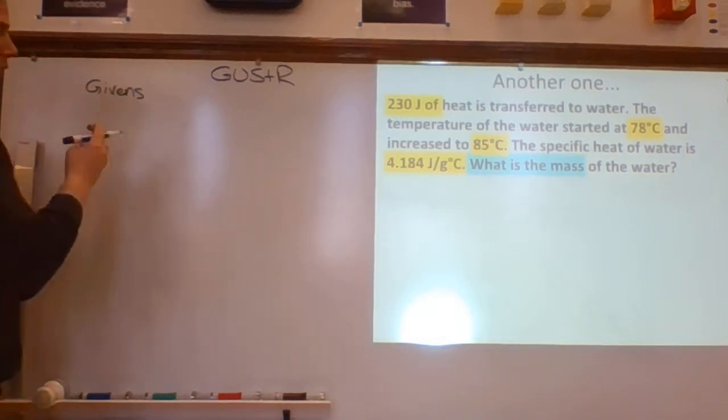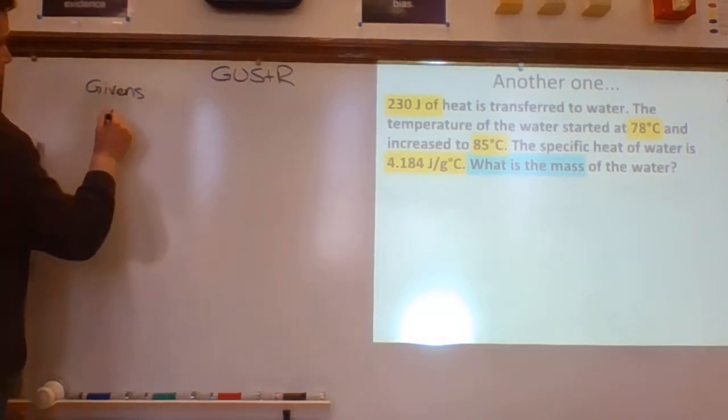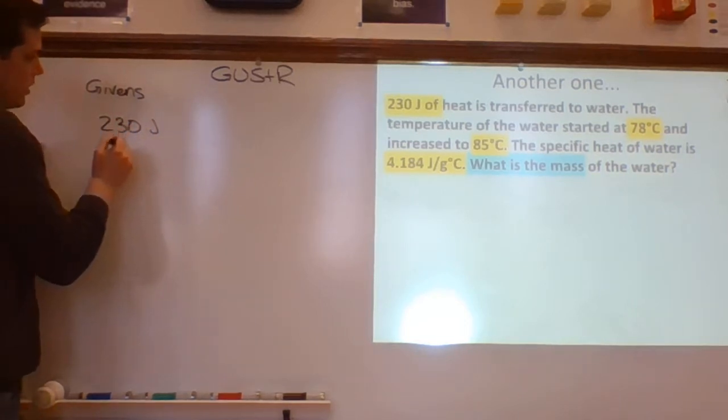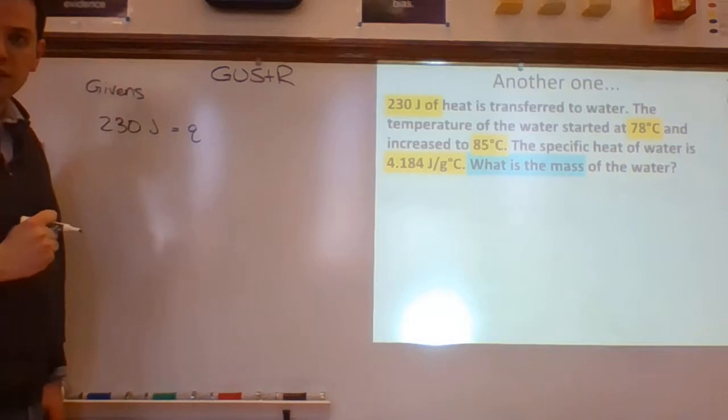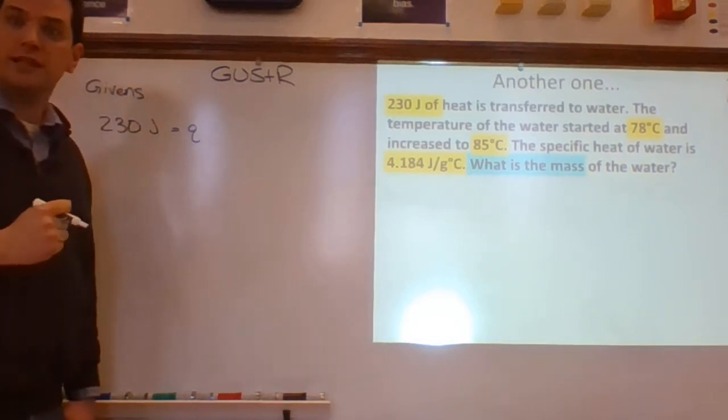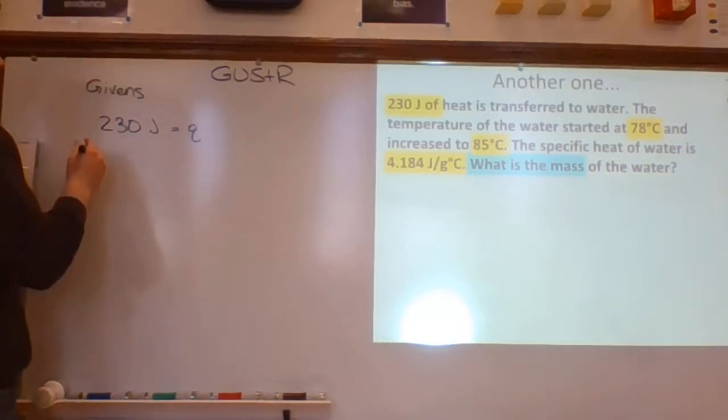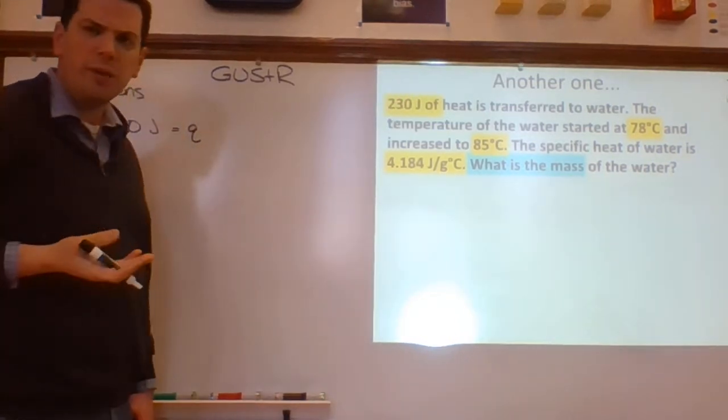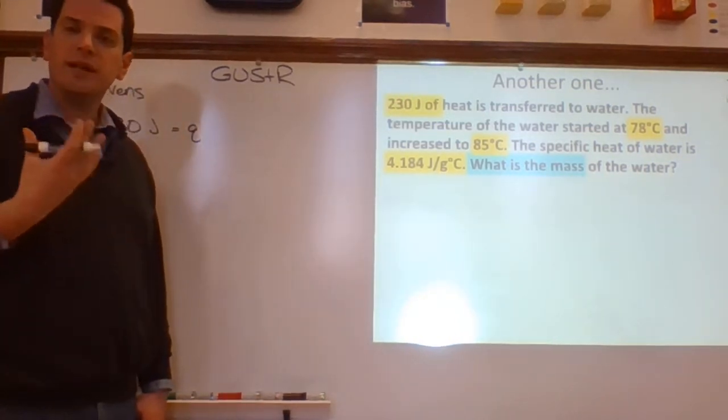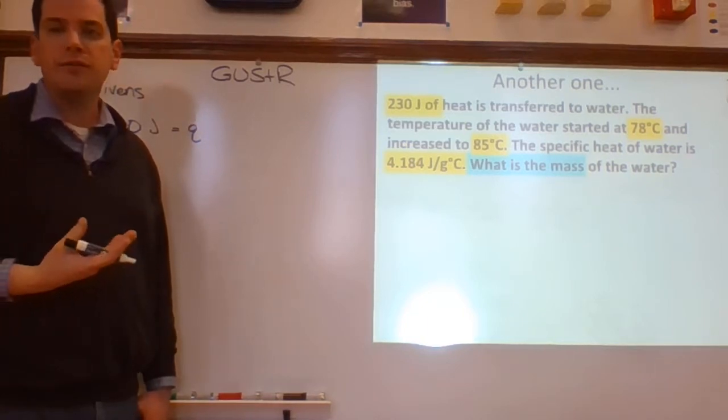So the givens, we have three givens here, right? We have 230 joules. That's equal to heat. That's Q. Remember the symbol for heat is Q for reasons surpassing understanding. Then we have these two temperatures, right? I know I'm going to subtract them. I know that that's going to be my delta T. We do that whenever we have two temperatures.